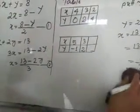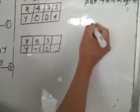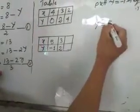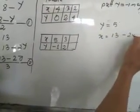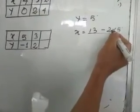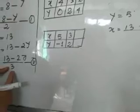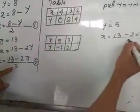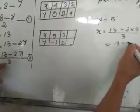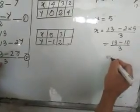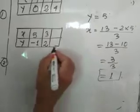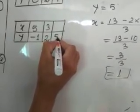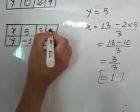For the last value, let's take Y equal to 5. So 13 minus 2 into 5, divided by 3. You may think how this 3 is coming — it is from the equation. 2 times 5 is 10. 13 minus 10 is 3. 3 divided by 3 is 1. When we take Y as 5, X is 1.